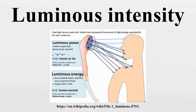Germany, Austria, and Scandinavia used the Hefner Kerze, a unit based on the output of a Hefner lamp. In 1881, Jules Vial proposed the Vial as a unit of luminous intensity, and it was notable as the first unit of light intensity that did not depend on the properties of a particular lamp. All of these units were superseded by the definition of the candela.